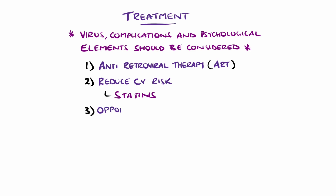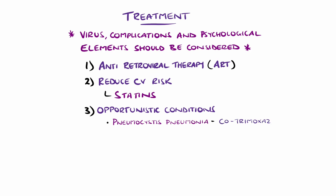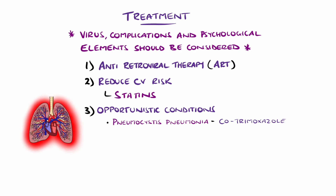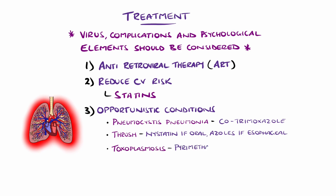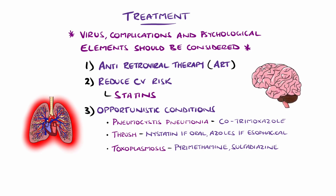Specific treatment is indicated depending on the opportunistic disease developed. For pneumocystis pneumonia, antibiotics like co-trimoxazole, also known as Septrin, are used. For thrush, if oral, nystatin can be used, though if there is a risk of esophageal involvement, systemic antifungals like azoles are used. In the case of toxoplasmosis, pyrimethamine and sulfadiazine are options. Kaposi's sarcoma may be treated with cryotherapy or radiotherapy, though systemic chemotherapy may be needed depending on the individual case.